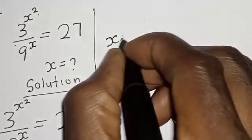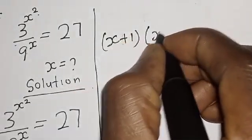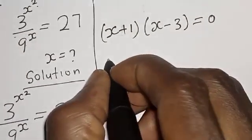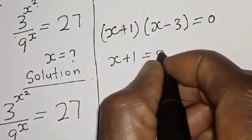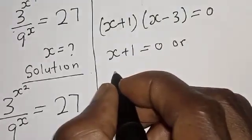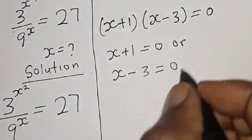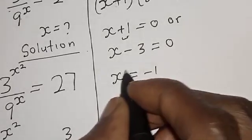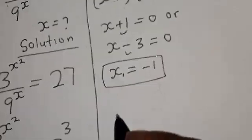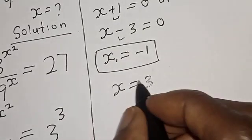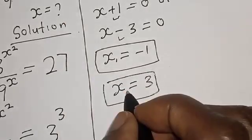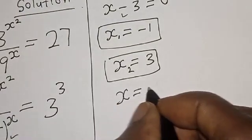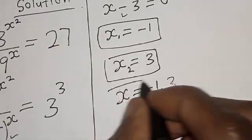Now we have (s + 1) multiplied by (s minus 3) equals 0. So either s plus 1 equals 0, giving s equals minus 1 (that is s₁), or s minus 3 equals 0, giving s equals 3 (that is s₂). Therefore the values of s are minus 1 and 3 — that is our final answer.